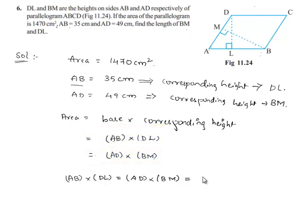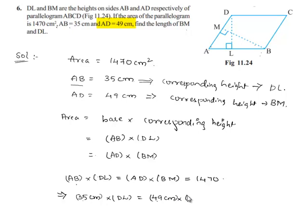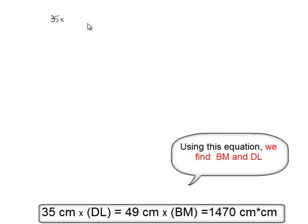Since the area of the parallelogram is 1470, and AB is 35 cm and AD is 49 cm, we can write: 35 × DL = 49 × BM = 1470.